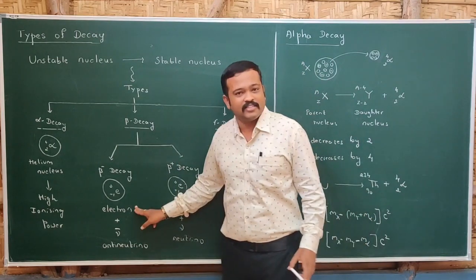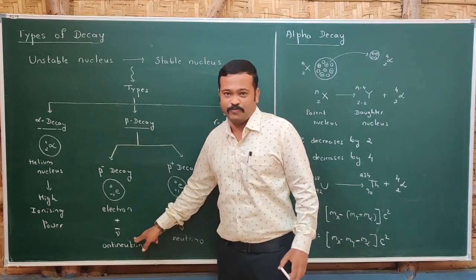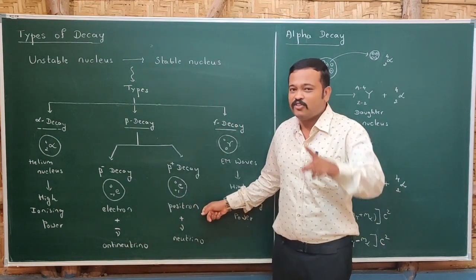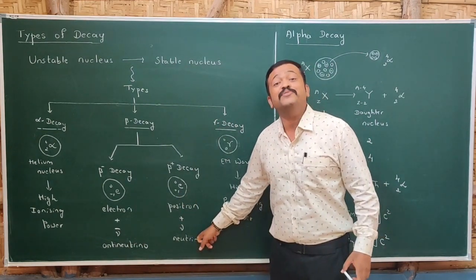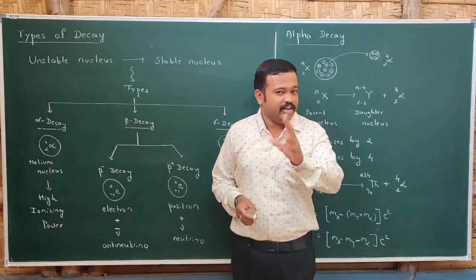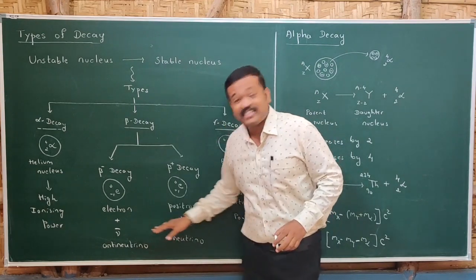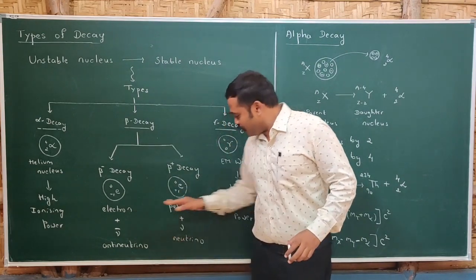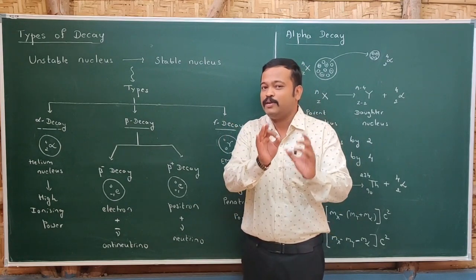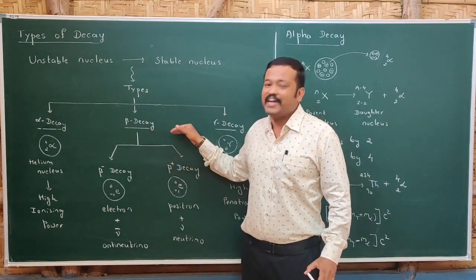Whenever an electron is emitted, it is always accompanied by a particle called an anti-neutrino, and whenever a positron is emitted it is always accompanied by a particle called a neutrino. These particles are invisible and do not have charge or mass. They are emitted alongside the electron and positron to conserve energy and spin momentum. So this type of decay is called beta decay.